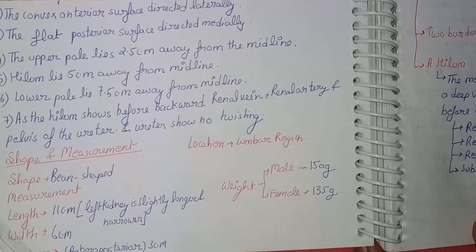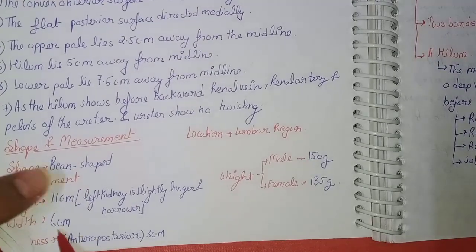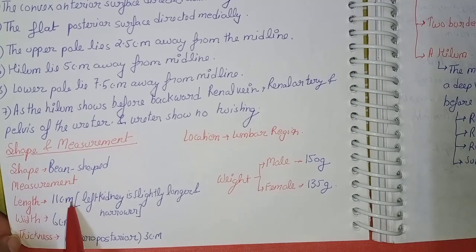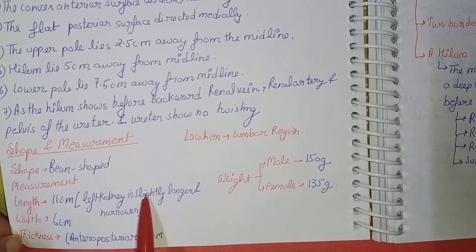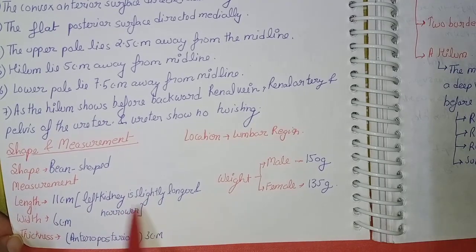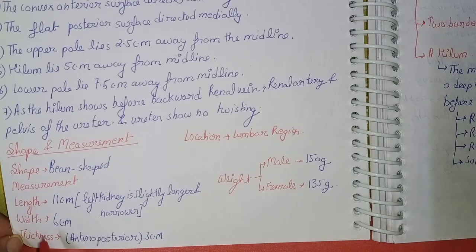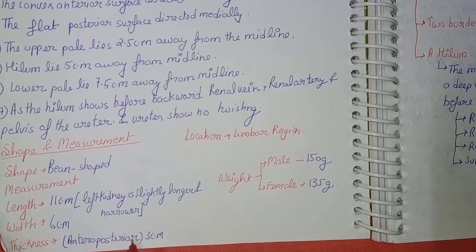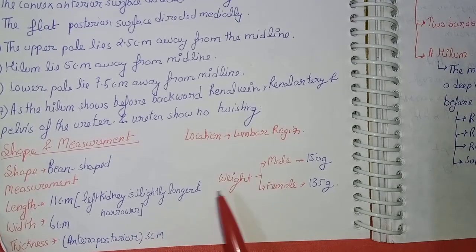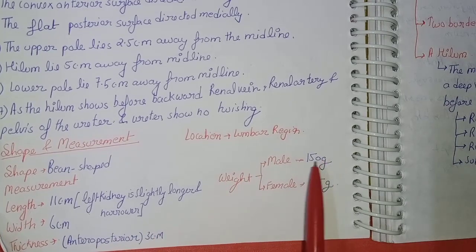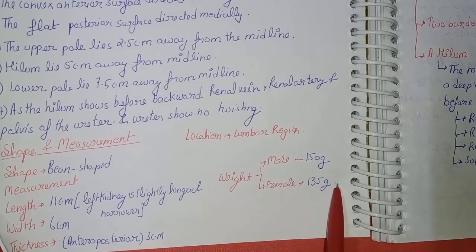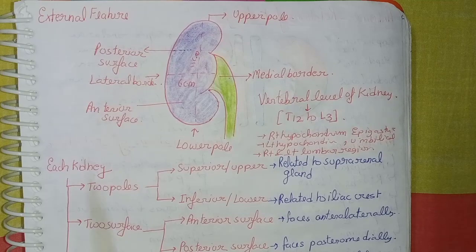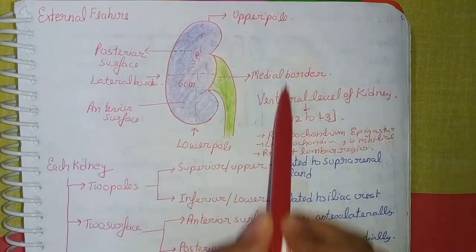Coming to shape, measurement, and location of the kidney: its shape is bean-shaped. Its length is 11 cm — the left kidney is slightly longer and narrower. Its width is 6 cm, thickness anteroposterior is 3 cm, weight in males is 150 g and in females is 135 g. Its location is in the lumbar region.